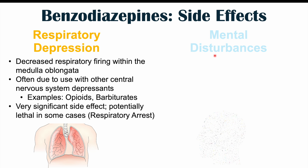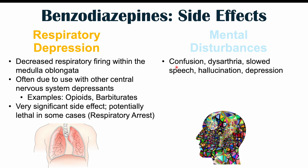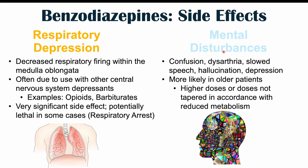Mental disturbances have also been reported, including confusion, dysarthria (slurred or slowed speech), hallucinations, and depression. These are more likely to occur in older patients due to reduced metabolism of benzodiazepines with age. As patients get older, their ability to metabolize benzodiazepines decreases, increasing these side effects, particularly at higher doses. It's important to reduce dosing or eliminate the medication if possible.